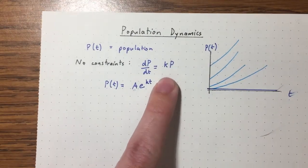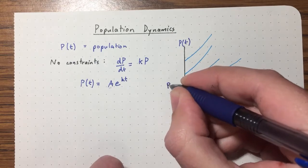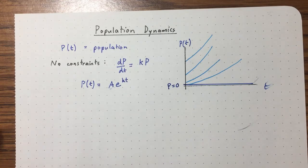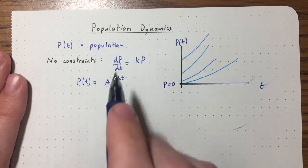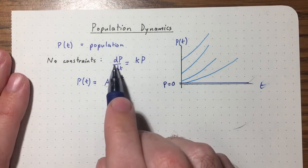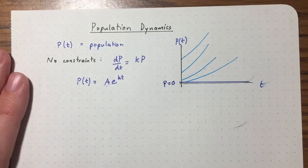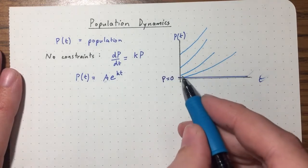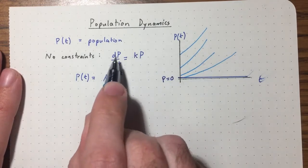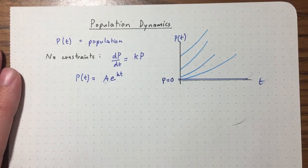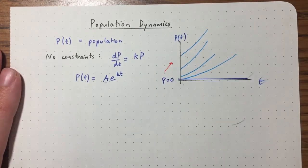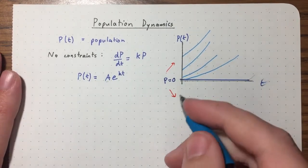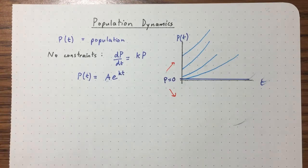The only equilibrium solution is the constant solution P equals zero. We find equilibrium solutions by setting dP/dt equal to zero, giving P = 0. In this case it's an unstable equilibrium, because if we start above it, dP/dt is positive and we're moving away from the equilibrium. If we start below it, dP/dt will be negative, but we don't really consider negative populations.